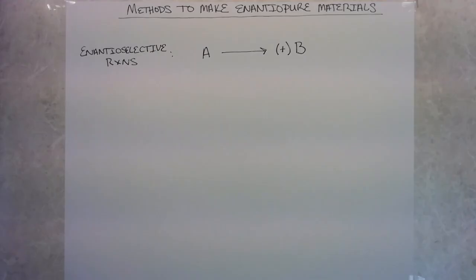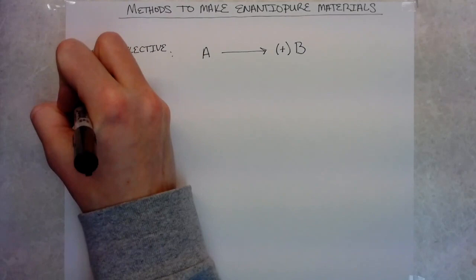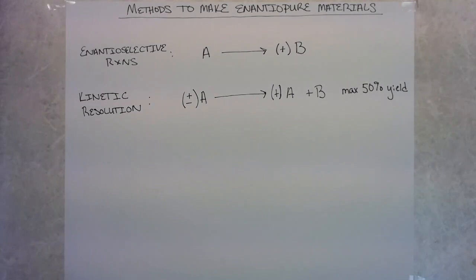We talked about kinetic resolution a couple podcasts back in more detail when we were going through the synthesis of proscenol by the Riesman group. Basically, when you have a mixture of two enantiomers you use a chiral catalyst that reacts faster with one enantiomer than the other. In a kinetic resolution one enantiomer is selectively removed. Theoretically the highest possible yield is 50 percent, because one enantiomer can be converted completely to product and the other remains as unreacted starting material.